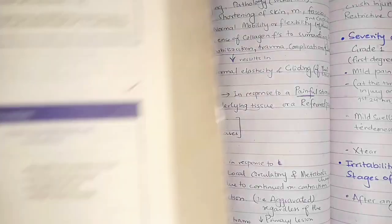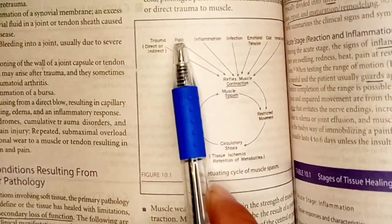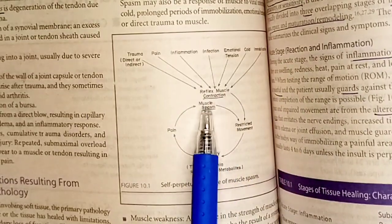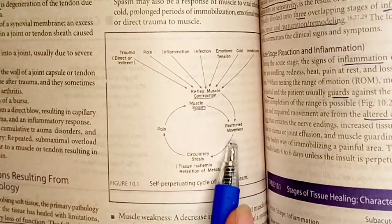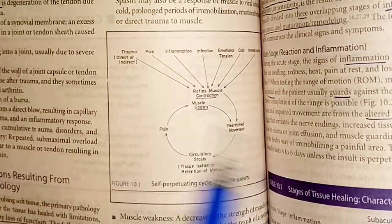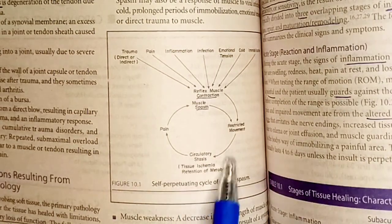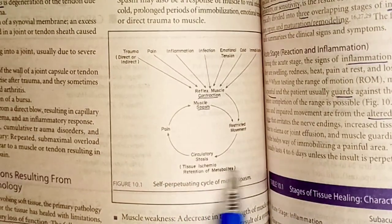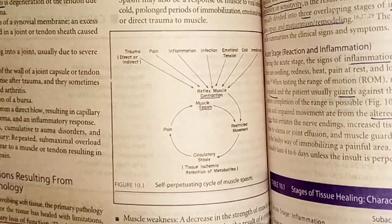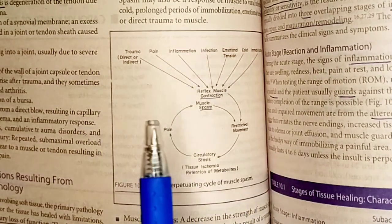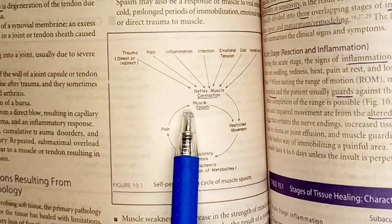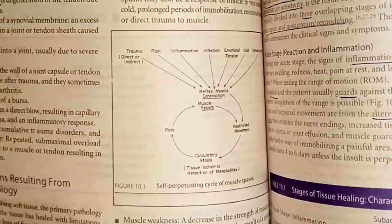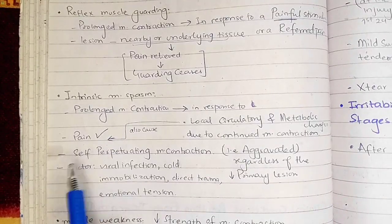Looking at this diagram, trauma, pain, inflammation, infection, emotional tension, cold, and immobilization are all causes of reflex muscle contraction. This reflex muscle contraction restricts movement, causing decreased blood flow — circulatory stasis — which leads to tissue ischemia and retention of metabolites. The waste deposited in that area causes pain, which causes muscle spasm, which again causes restricted movement, and the cycle continues. This is how it is self-perpetuating.